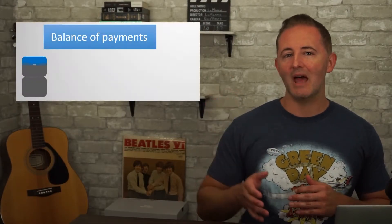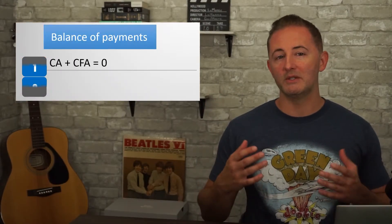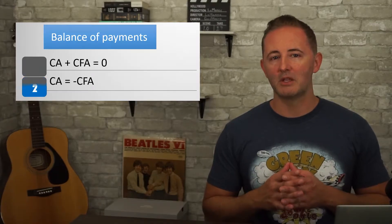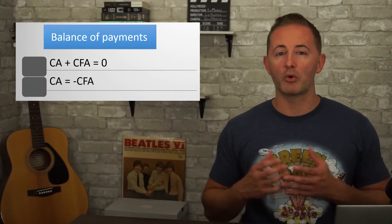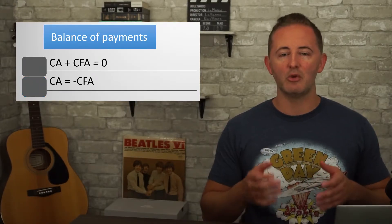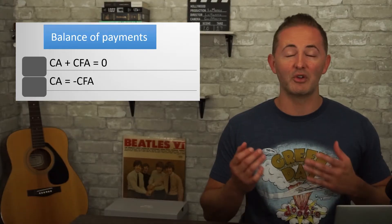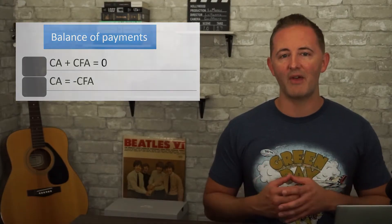The balance of payments includes both the current account (CA) and the capital and financial account (CFA). While each of them individually can be in surplus or deficit, taken together they'll always be balanced. In other words, CA plus CFA equals zero, or we can say that CA equals the negative of CFA.